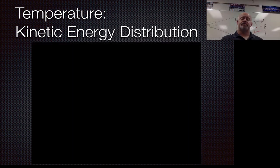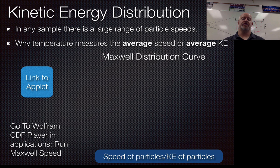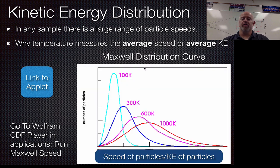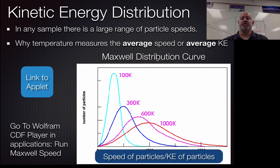So what they're talking about in that video is the fact that at any given temperature we really don't have the same speed of particles. What we have is a range of speeds. What we do with that is called a kinetic energy distribution. Because temperature measures the average speed or the average kinetic energy, that's what we're really looking at here.